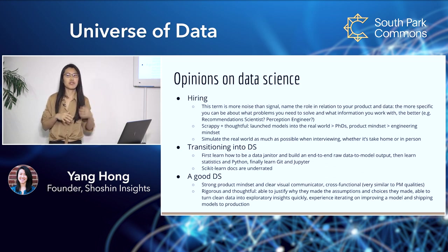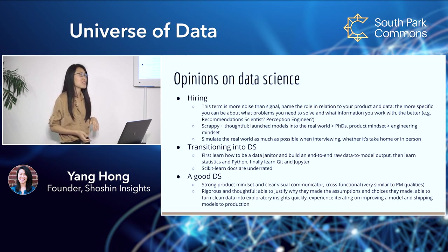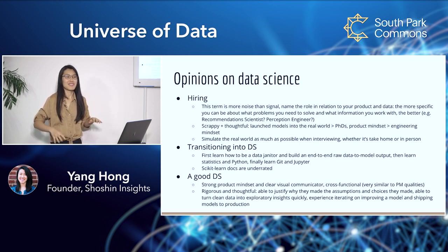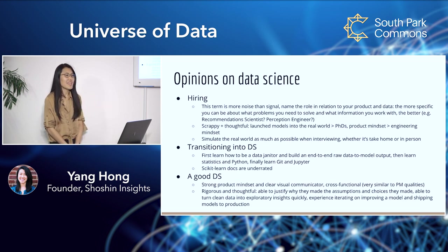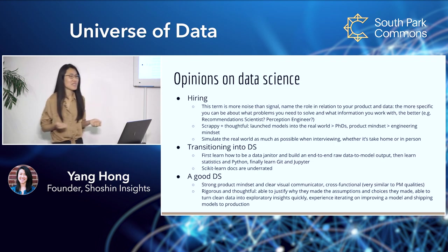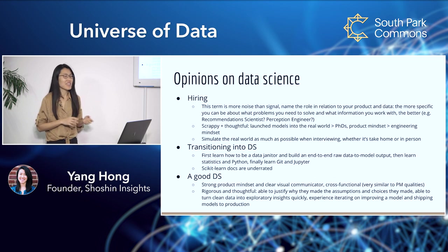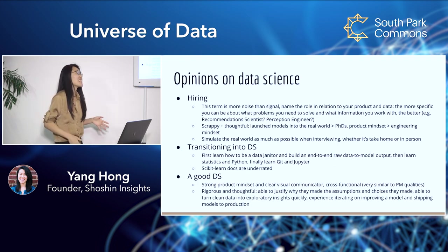When interviewing, whether a take-home or on-site, simulate the real world as much as possible. Give them access to a partition of your production database, give them a problem you have right now, and see what they can do with it. Don't just quiz them on what is a generalized linear model. If you want to transition into being a data scientist, the order of operations is: first be a data janitor, because you're not going to have a data engineer do that for you — especially at a startup. Be able to build something end to end, not just a model in the middle. Then learn stats and Python, then learn Git and Jupyter. The scikit-learn docs are underrated — extremely well written, human readable, with pretty pictures.